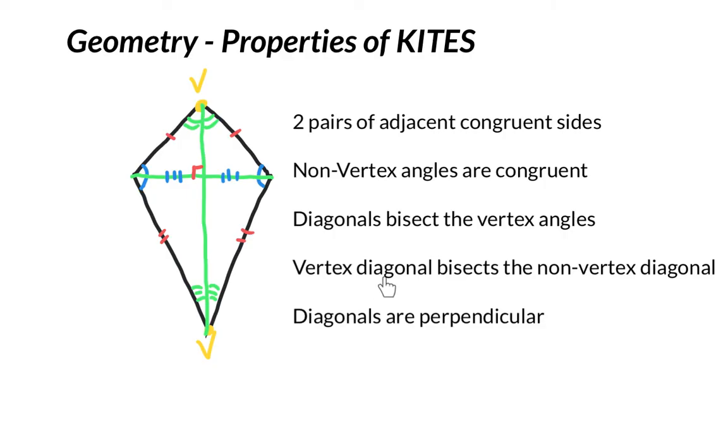The vertex diagonal bisects the non-vertex diagonal, so this one from vertex to vertex cuts this one into two equal pieces. And the two diagonals are always perpendicular to one another.